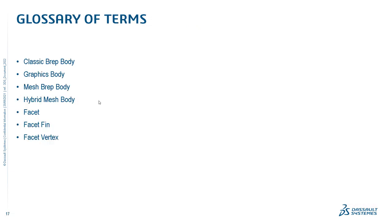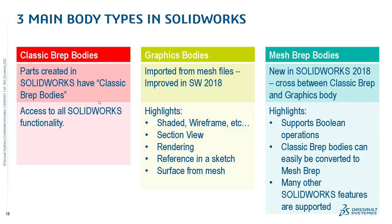Before jumping into SOLIDWORKS, let's review key terms. The first main body type is classic B-REP bodies — SOLIDWORKS geometry created by extruding, filleting, or cutting. When you import a mesh file directly into SOLIDWORKS, it creates a graphics body. You are somewhat limited in what you can do with graphics bodies, but we've made significant improvements starting in SOLIDWORKS 2018. Next is mesh B-REP bodies — a hybrid between classic B-REP and graphics bodies — where the boundary representation is determined using a series of triangles, wrapped with a surface that supports many geometric operations and SOLIDWORKS features.